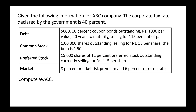Given the following information for ABC company: the corporate tax rate declared by the government is 40%. The company has issued bonds — 5,000 bonds with a 10% coupon rate, par value 1000, maturity 20 years, and a current selling price of 115% of par value, which equals 1150.